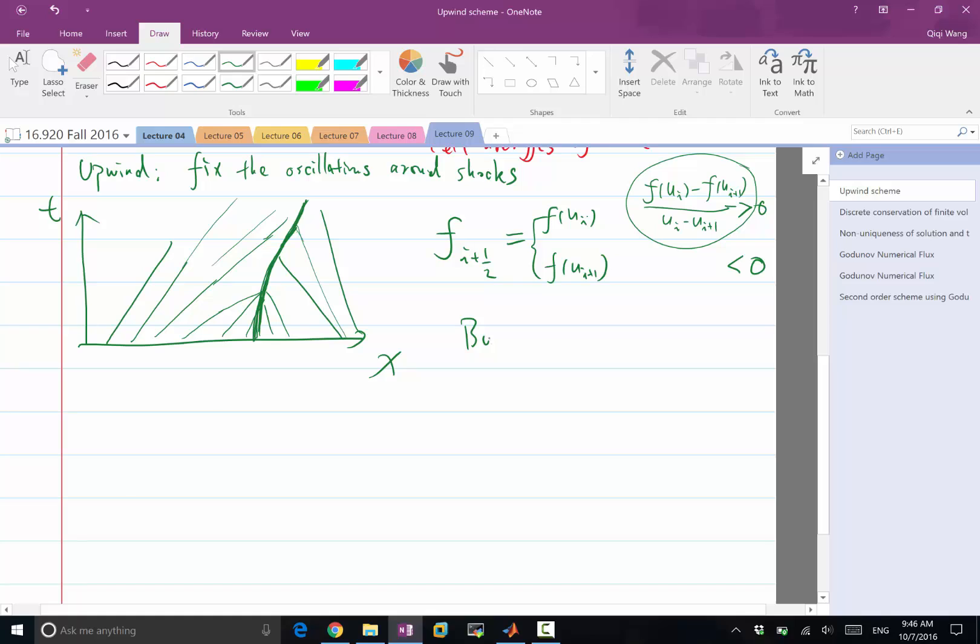For example, Burger's equation. A simple way to get rid of that is by plugging the formula for f into that equation. We are going to get f of ui minus f of ui plus 1 divided by ui minus ui plus 1 would be just equal to half of ui plus ui plus 1, by plugging the half of u square formula.